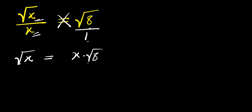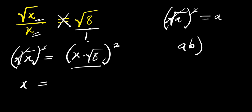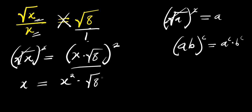Now the square root here — I can take the squares in order to eliminate the square root. Remember, if you have square root of a raised to the power of 2, this is just a, because the square eliminates the root. Also, if you have (a times b) raised to the power of c, this equals a^c times b^c. So this gives us x squared times square root of 8 raised to the power of 2.